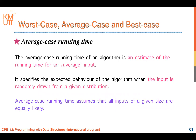We also have the average case running time. The average case running time of an algorithm is an estimate of the running time for an average input. If you have many inputs and many samples, you try to find the average case by finding the mean of several cases, divided by n cases. To find the average case, you can specify it in terms of the input when the input is randomly drawn from a given distribution. The average case assumes that all inputs of a given size are equally likely.